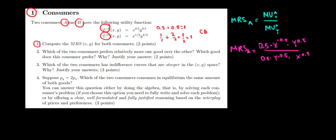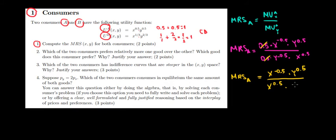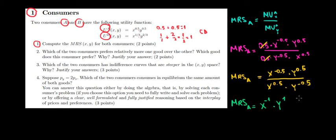Now let's simplify. We have 0.5 in both the numerator and denominator, so we can cancel them out. The MRS of consumer A becomes X to the power minus 0.5 times Y to the power 0.5, divided by X to the power 0.5 times Y to the power minus 0.5. Subtracting the exponents: X gets minus 0.5 minus 0.5 = minus 1, and Y gets 0.5 minus (minus 0.5) = 1. So MRS_A equals (1/X) times Y, which is Y divided by X.